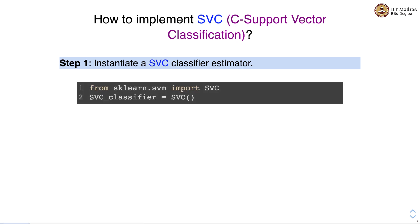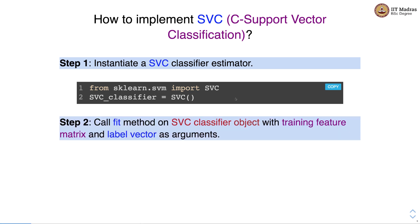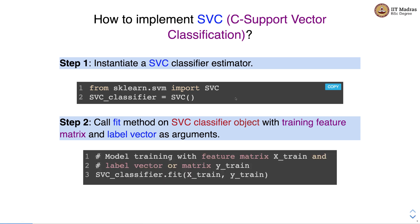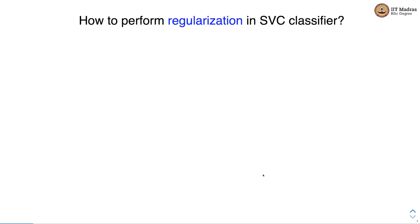Let's see how to implement SVC, or C-Support Vector Classification. We first import the SVC estimator from the sklearn.svm module, then instantiate the SVC object. In the next step, we call the fit method on the SVC classifier object, passing the training feature matrix X_train and label vector Y_train as arguments.